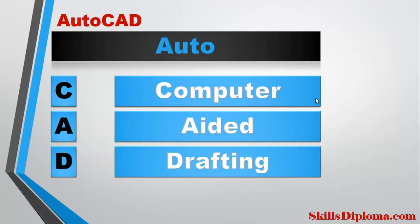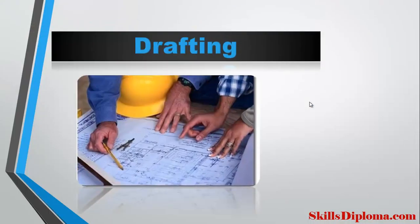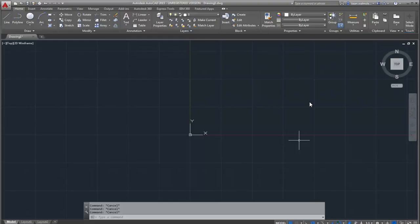AutoCAD is a software which allows you to create drawings. Draftings are basically two types: Manual Draftings, which may not be fully accurate, and Computer-aided Draftings, which is 100% accurate software for 2D and 3D drawing.